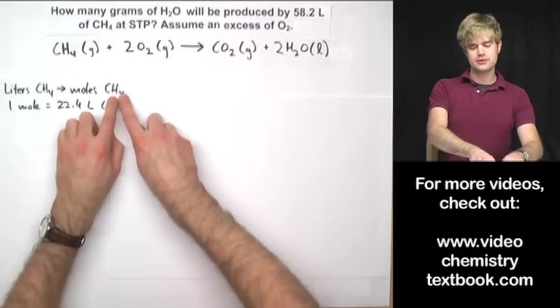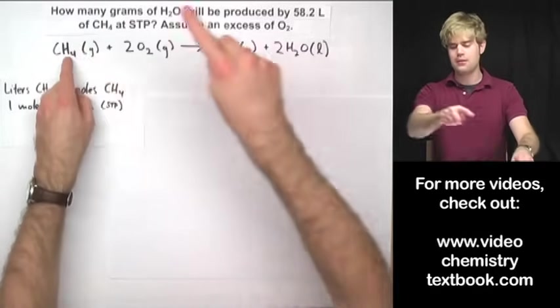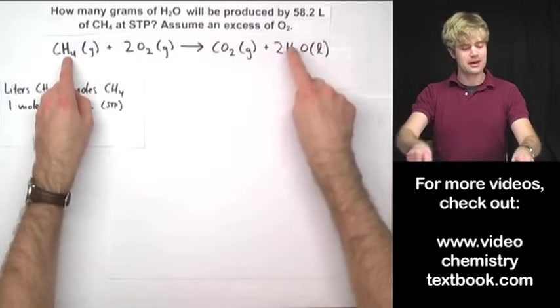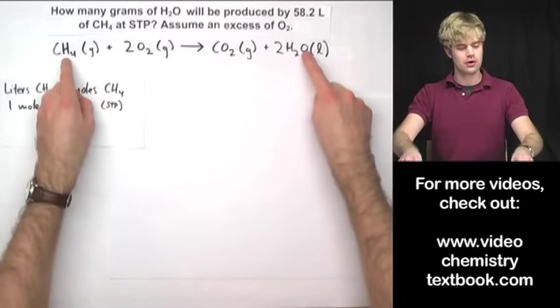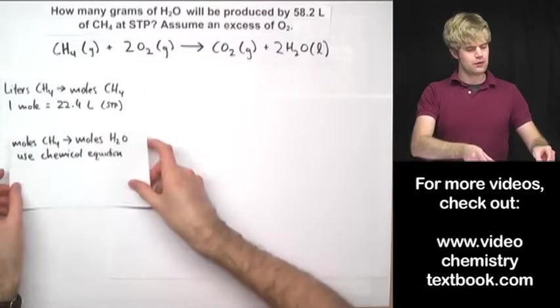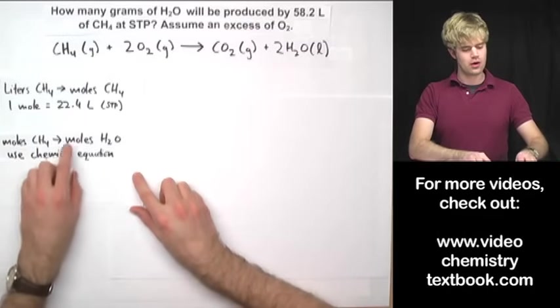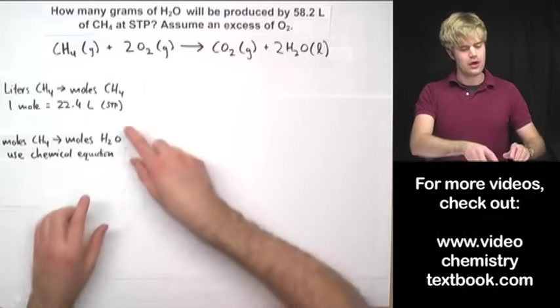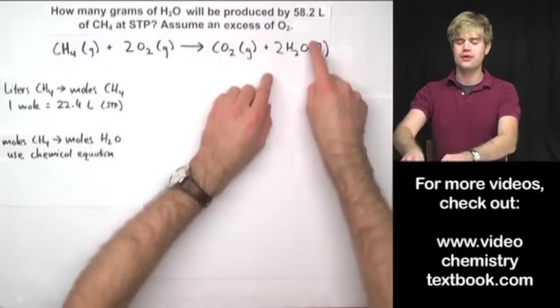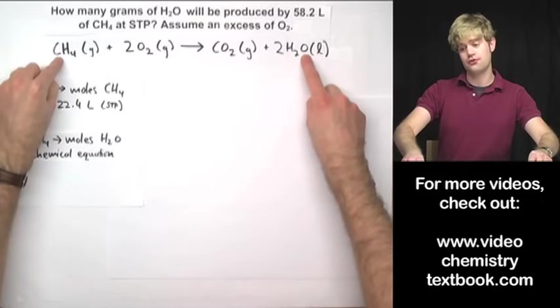After I get my moles of CH4, the next thing that I want to do is find out how many moles of H2O I'm going to get out for that number of moles of CH4. So that's what I say here when I say that the next step is going to be to go from moles of CH4 to moles of H2O. I'm going to use the chemical equation to find out how many moles of H2O I'll get for each mole of CH4 that I put in.